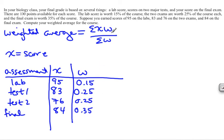Now if you look at the formula, it says to take X times W. So I like to make a column that is X times W, and then all I got to do is multiply those numbers together.